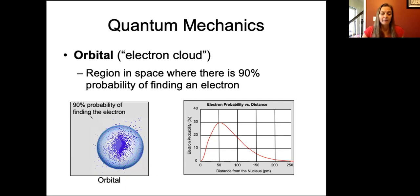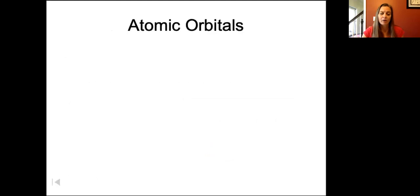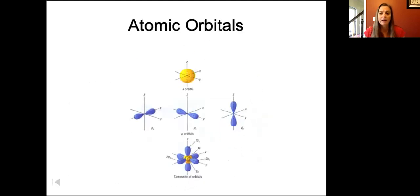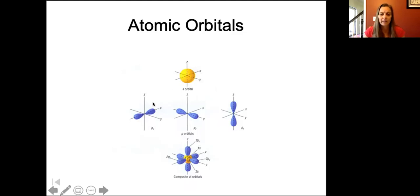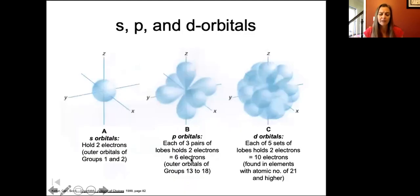There are four different orbitals, and at each energy level or each period of the periodic table, we add one more shape of orbitals. At energy level one we had only the s orbital. At energy level two we have both s orbitals and p orbitals, and they superimpose. When we get to energy level three we added the d orbitals, and you can see how these all superimpose upon each other. At energy level four we add in the f orbitals.